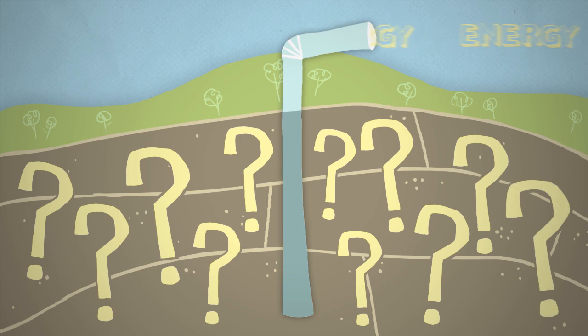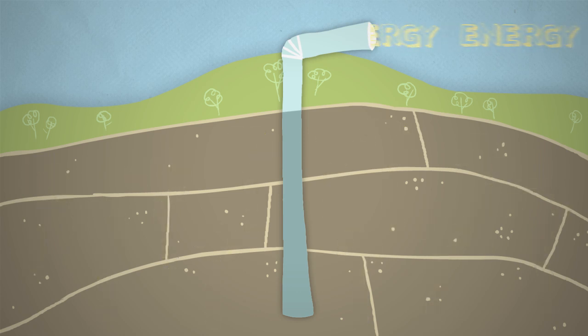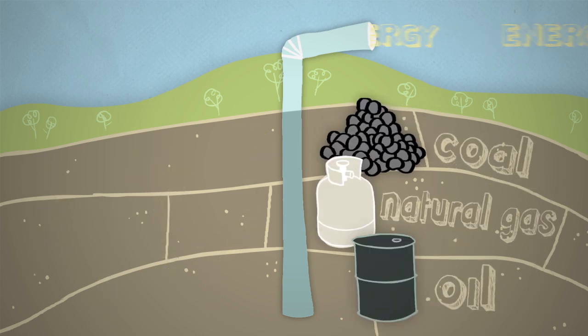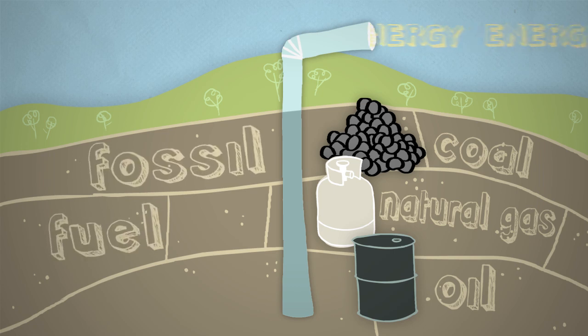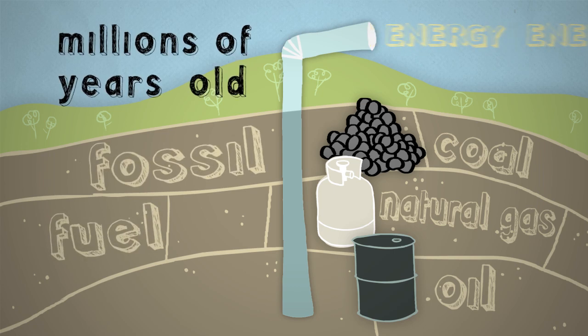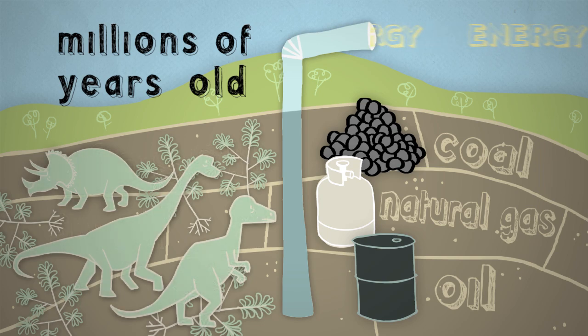Where does energy come from? Well, we get most of it from burning things like coal, oil, and natural gas. These are called fossil fuels because they were formed deep in the ground over millions of years by ancient decaying organisms, or fossils.